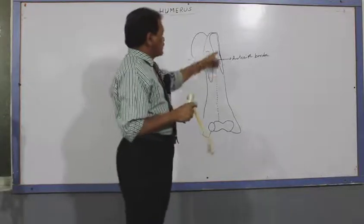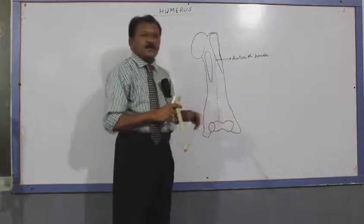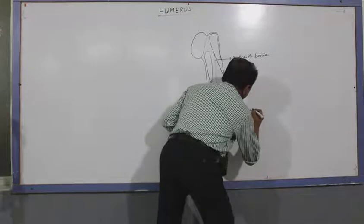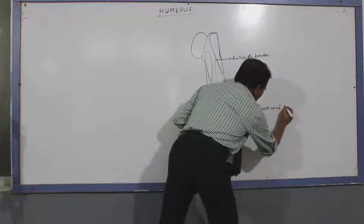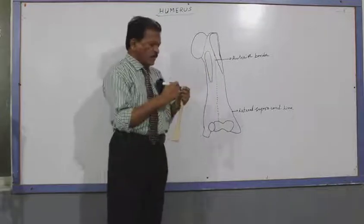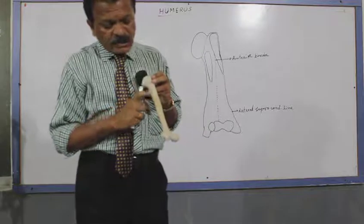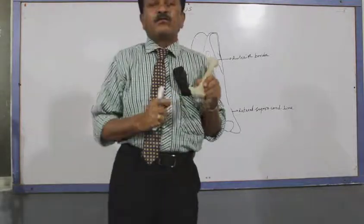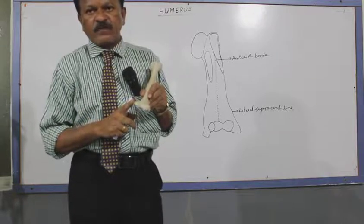The lateral border begins at the posterior aspect of the greater tubercle. It descends downwards; in the lower one third it is very prominent, and here it is called the lateral supracondylar line. The medial border begins just lateral to the lesser tubercle of the humerus. It descends downwards and is very prominent in the lower one third, where it is called the medial supracondylar line. It also extends up to the lower end of the humerus.